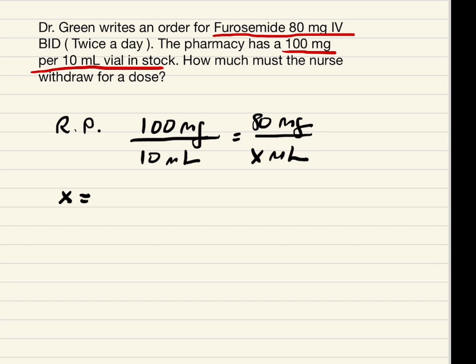We cross-multiply: 80 milligrams times 10 ml, divided by 100. Our answer is 8 ml.